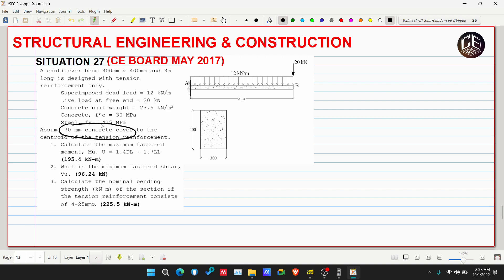Number one: calculate the maximum factored moment Mu where the combination load is equivalent to 1.4 DL plus 1.7 LL.